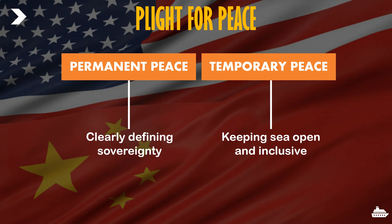There is a plight for peace in the Southeast Asian region — either permanent or temporary peace. For permanent peace, sovereignties must be clearly defined: Vietnam, Brunei, Malaysia, and the Philippines must define their sovereignty and China must respect it, requiring years of peace talks and a conclusive agreement. Until then, a temporary state of peace can be maintained by keeping the sea open and inclusive. Several economies depend heavily on the South China Sea, and it must remain free for all, as circumnavigation is not a viable or economically feasible option — it would require high expenses that would essentially nullify the purpose of trade.